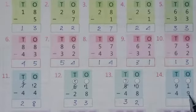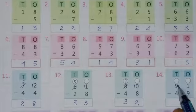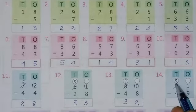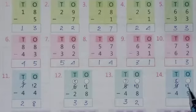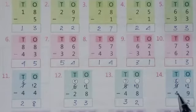Here 1 minus 9 is not possible, so borrow from this digit — this will become 8 and here will be 11. Now 11 minus 9 equals 2, and 8 minus 4 equals 4.